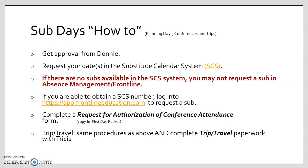How to request a sub for planning days, conferences, and trips. Planning days, conferences, and trips take a little more preparation on your part. The first step is to get approval from Donnie — he's already approved three planning days for each of you for this school year. New teachers, please see your department chairs for information on your planning days. The second step is to request your date in the Substitute Calendar System, or SCS — the link is included on this slide. The SCS system lets you know if there are subs available for the date you're requesting. If there are no subs available in the SCS system, you may not request a sub in Frontline and may not be absent that day for a planning day, conference, or trip. If it's imperative that you attend a particular conference or trip and subs aren't available, if you get approval from Donnie to attend, it's your responsibility to get your classes covered by coworkers and let me know who will be covering so I can pay them.